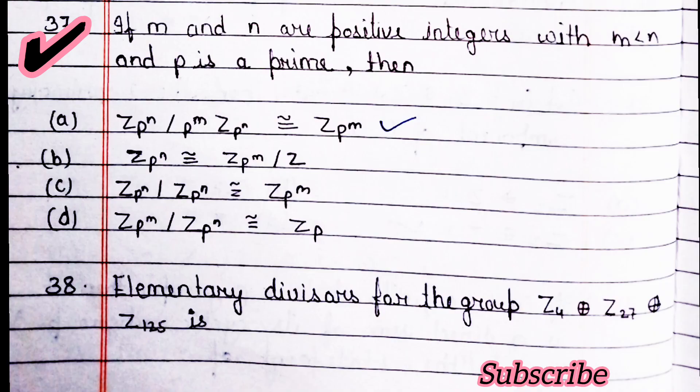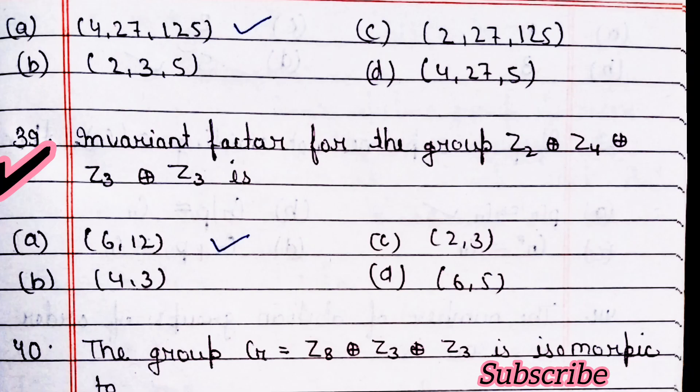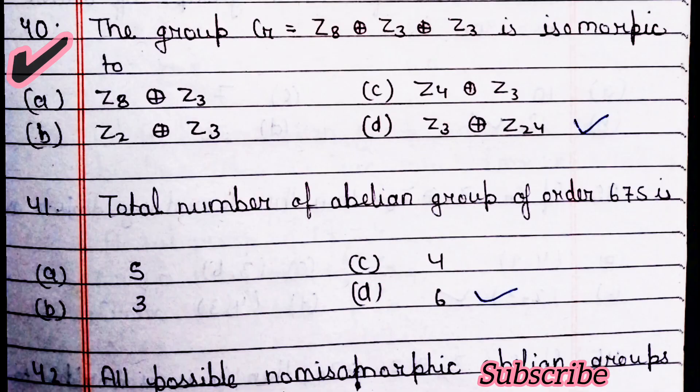Question 36: if m and n are positive integers with m less than n and p is prime, then — option A is right. Question 37: same conditions — option A is right. Question 38: elementary divisors for the group — option A is right. Next question: invariant factors for the group — option A is right.